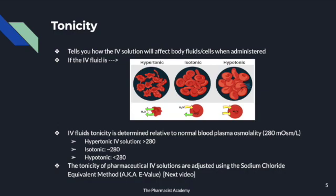Isotonic simply means the IV solution has the same concentration as the bloodstream, so there is not much of a fluid shift — they are in equilibrium, moving back and forth. With a hypotonic solution, it makes the bloodstream less concentrated because it consists of more solvent than solutes, diluting the bloodstream and decreasing the osmotic pressure, causing water to leave the blood and enter the cells.